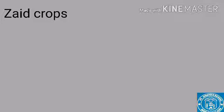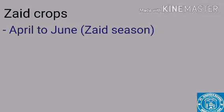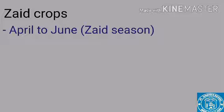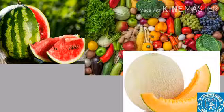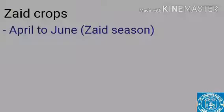Next is Zaid. The summer months between the harvesting of Rabi crops (April to June) and the sowing of Kharif crops (beginning in June) are called the Zaid season. During this season, farmers cultivate crops that can be harvested quickly over a short period. Important Zaid crops include watermelon, musk melon, cucumber, vegetables, and fodder crops.